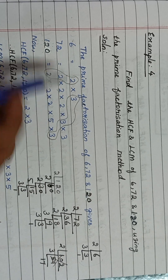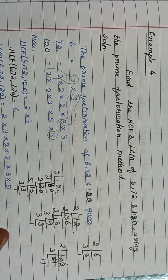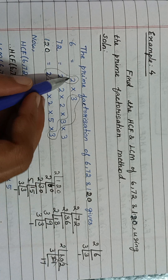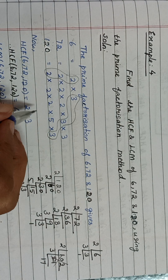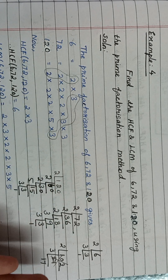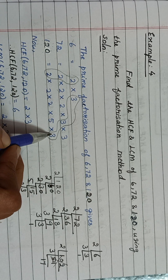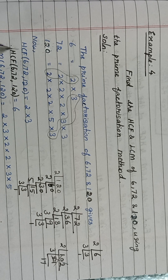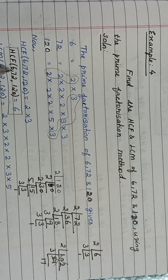From this, you write the HCF. When finding HCF, you identify the factor that is present in all three numbers. Here 2 is present in all three numbers, so you take one 2. Now is there any other number common in all three? Yes, 3 is common in all three, so you take one 3. Multiply these: 2 × 3 = 6, so this is the HCF of the given three numbers.